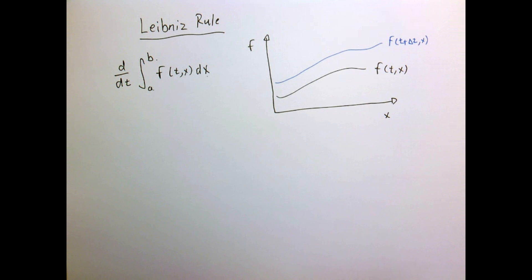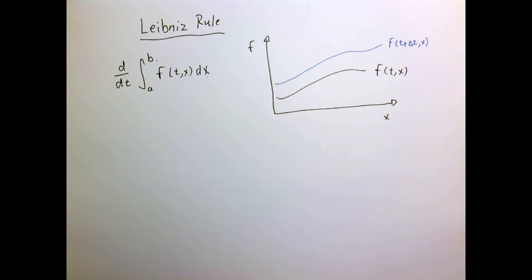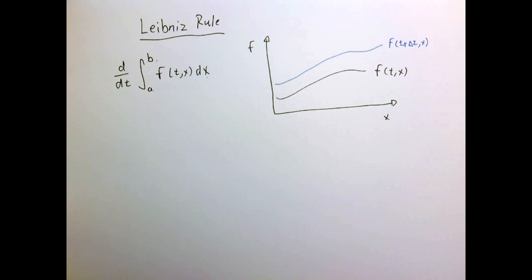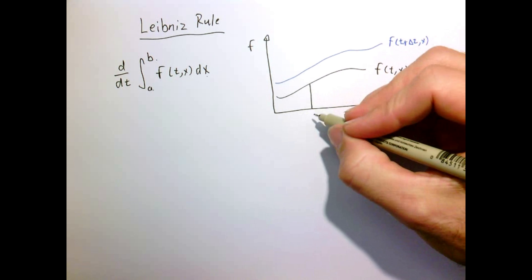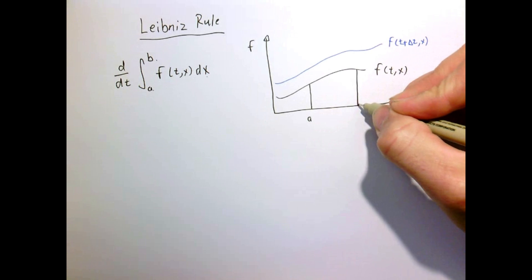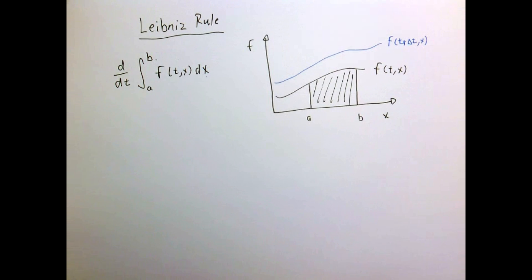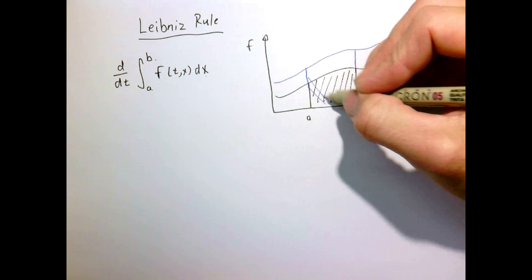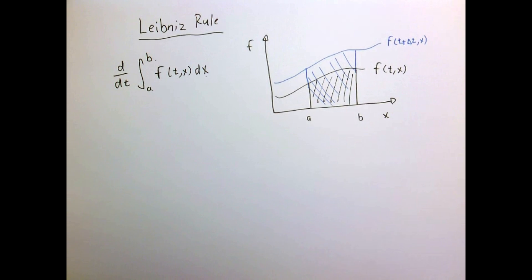So I'm going to have my function, which is a function of x and t. At time t it looks like this. Some short time later it's shifted a little bit, so at time t plus delta t it's moved. What we mean by taking the time derivative of the integral — the integral at the initial time, if this is our point a and b, is simply the area under the curve. At time t plus delta t it's going to be that area. So all we need to know is what's the difference between those, and take the limit as delta t goes to zero — that would be our formal definition of the derivative.